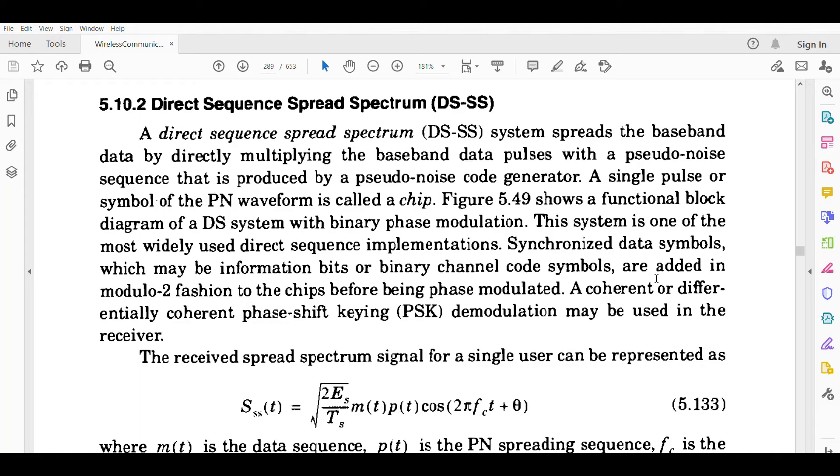Let us discuss DSSS - what is DSSS, what is FHSS, and what is the difference. A direct sequence spread spectrum (DSSS) system spreads the baseband data by directly multiplying the baseband data pulses with a pseudo-noise sequence that is produced by a pseudo-noise code generator.